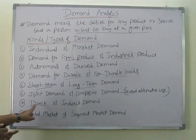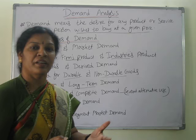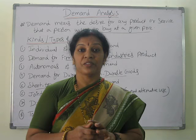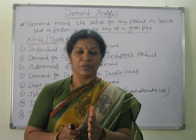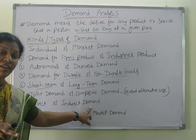The seventh type is direct and indirect demand. Direct demand means you want to buy a particular product directly. Indirect demand arises when, for example, there is a demand for a scooter or car, and automatically there is also demand for petrol and services. Though it is not directly linked, it is indirectly connected — that is indirect demand.